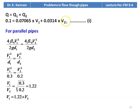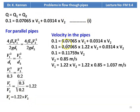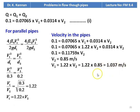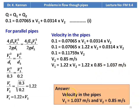Substituting V1 = 1.22 V2 into equation 1: 0.1 = 0.07065 × 1.22 × V2 + 0.0314 × V2 = 0.11759 V2. Therefore V2 = 0.85 meters per second and V1 = 1.22 × 0.85 = 1.037 meters per second. The answer: velocity in pipe 1, V1 = 1.037 m/s; velocity in pipe 2, V2 = 0.85 m/s.